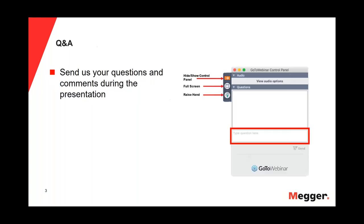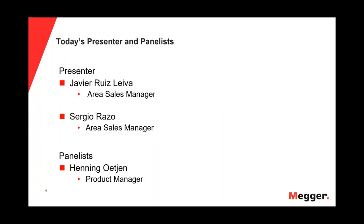On the right side of your screen, you will see a control panel that looks similar to this one. You can submit questions at any time during the presentation by typing in the box highlighted in red, and I will read the questions out during the Q&A segment at the end of each presentation. Today, we will have two separate presentations with their own Q&A sessions, so please stick around after our first presentation concludes. The presenters today will be Sergio Razio and Javier Ruiz-Levo, both being Megger's Cable Fault Location Test and Diagnostic Area Sales Managers. To assist with our question and answer session today, we will have Henning Ochen, Product Manager for Cable Product.